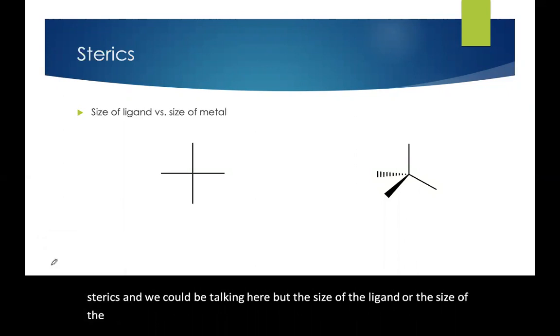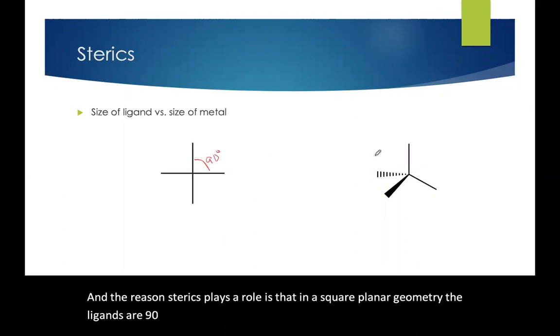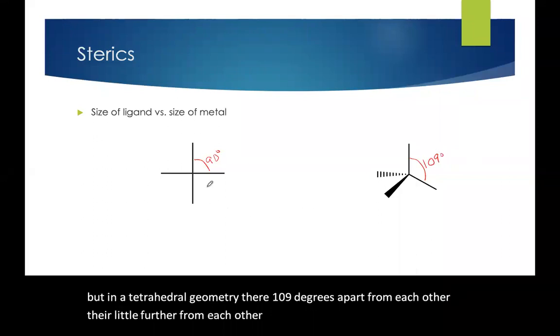The reason sterics plays a role is that in a square planar geometry, the ligands are 90 degrees apart from each other. But in a tetrahedral geometry, they are 109 degrees apart from each other. They're a little further from each other in tetrahedral than in square planar.